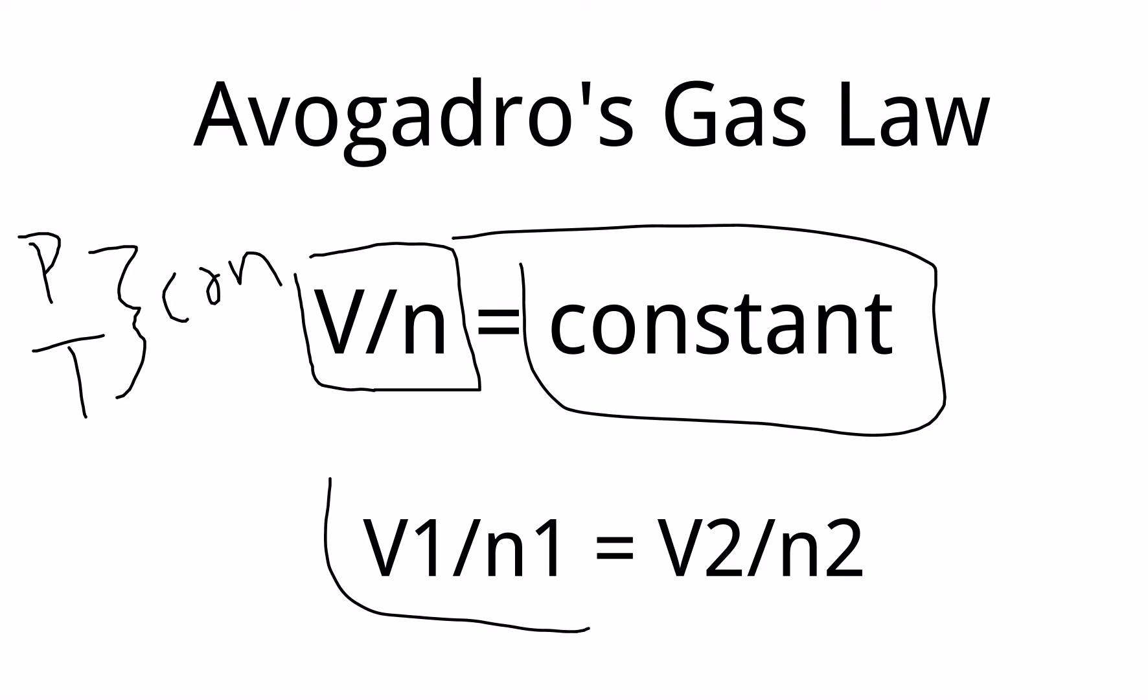So Avogadro's law says volume and moles are going to lead to a constant. Again, same premise. If I have an initial set of volume and moles, I only need one of the second volume or the second moles, and I can find the other one out.